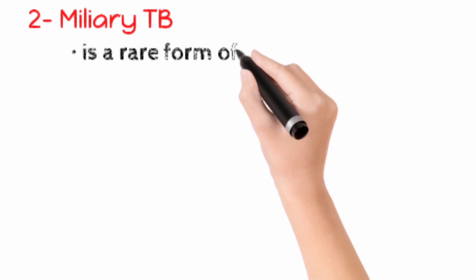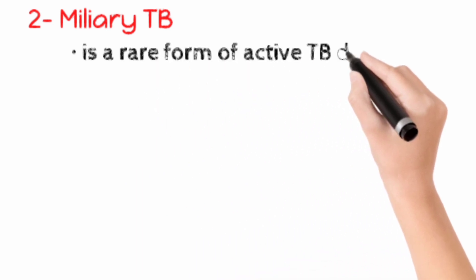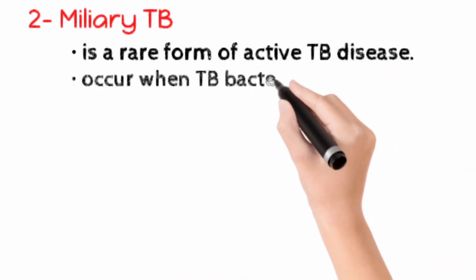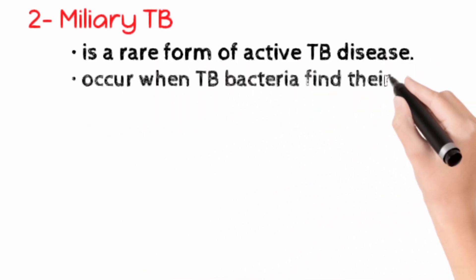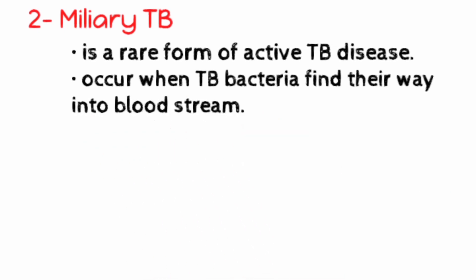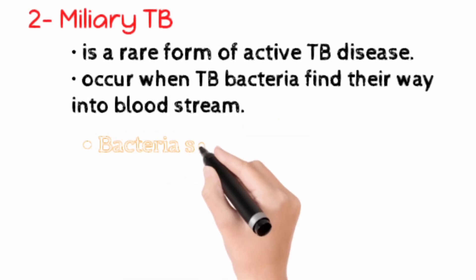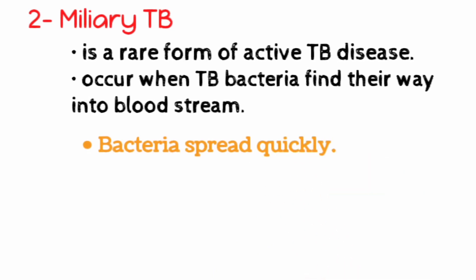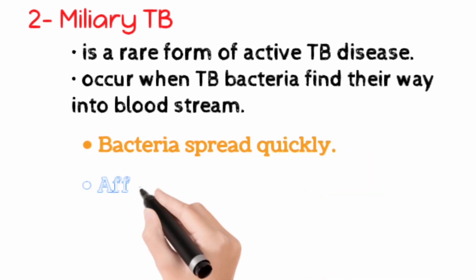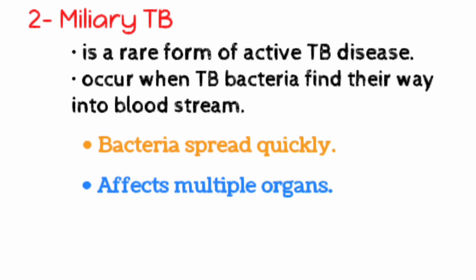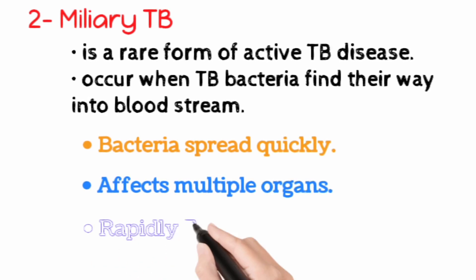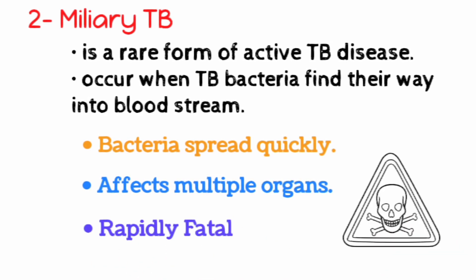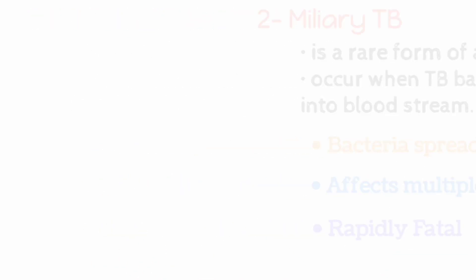Miliary TB is a rare form of active disease that occurs when TB bacteria find their way into the bloodstream. In this form, the bacteria quickly spread all over the body in tiny nodules and affect multiple organs at once. This form of TB can be rapidly fatal.